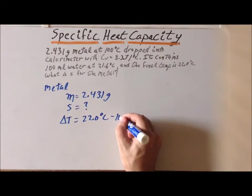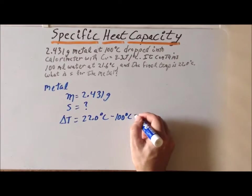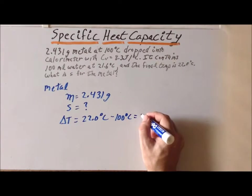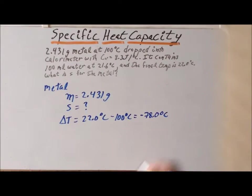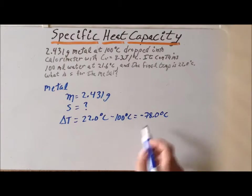minus 100 degrees centigrade. So, our change in temperature is actually going to be minus 78.0 degrees centigrade. And in any one of these types of problems, at least one of the elements will have a change in temperature that is negative.